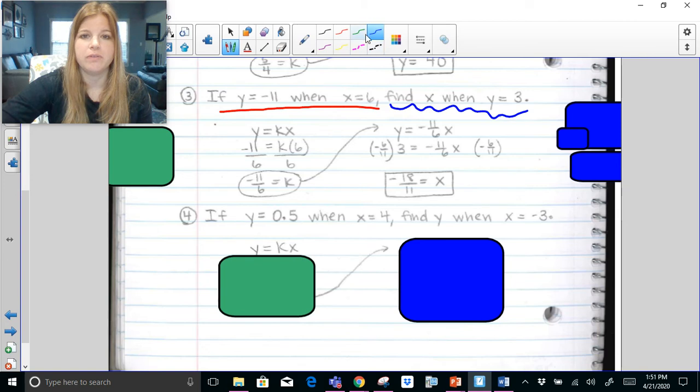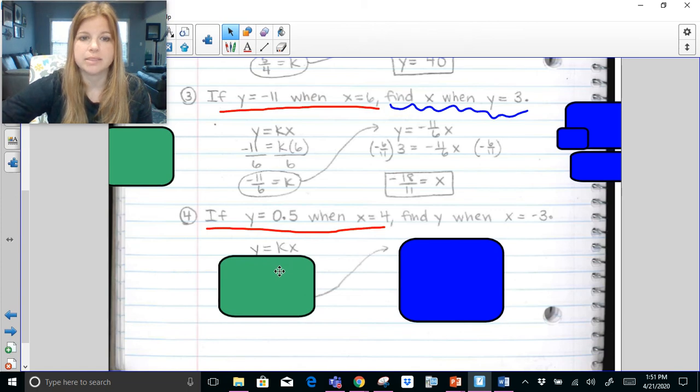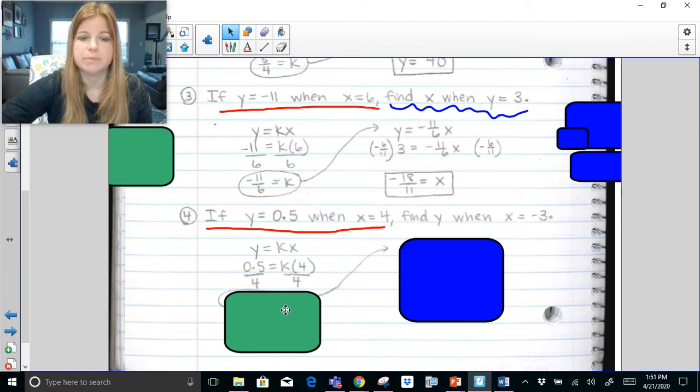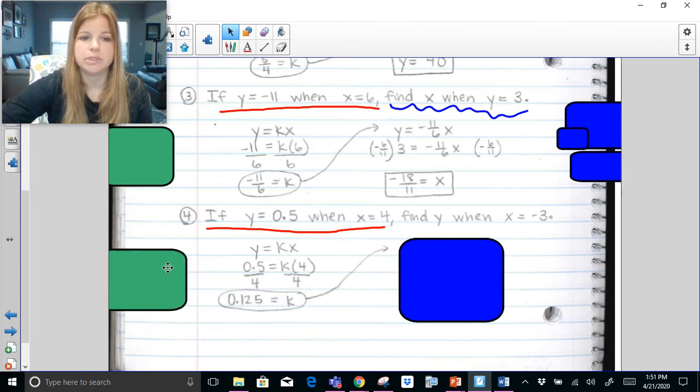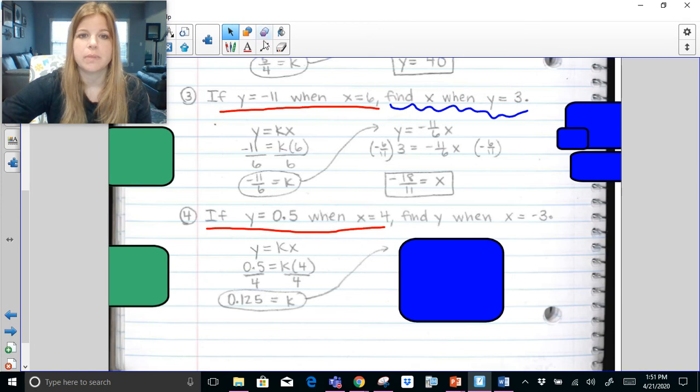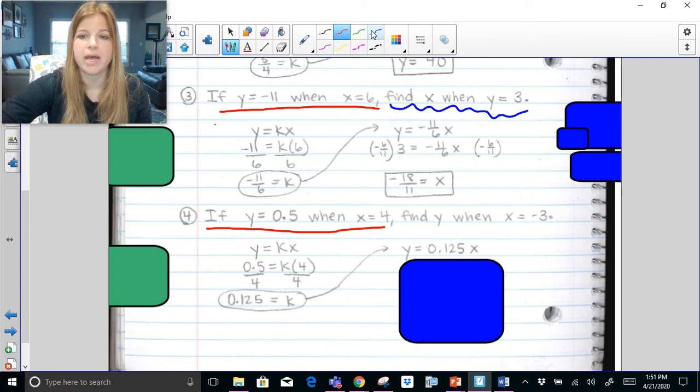If y equals 0.5 when x equals 4. So if y equals 0.5 when x equals 4, so I'm going to go ahead and substitute that in. I want to solve for k. Divide both sides by 4. k is equal to 0.125 or if you can call it one eighth. Now I can write my equation. So my equation is y equals 0.125x.